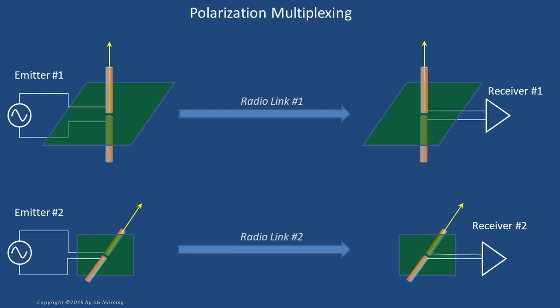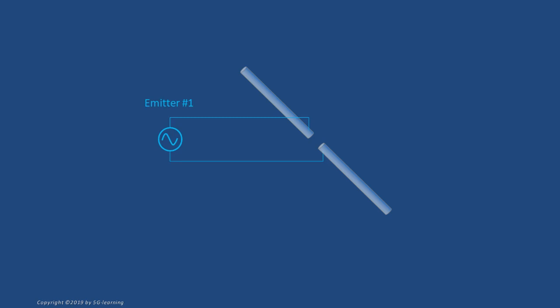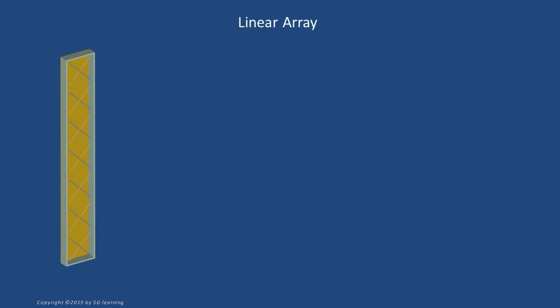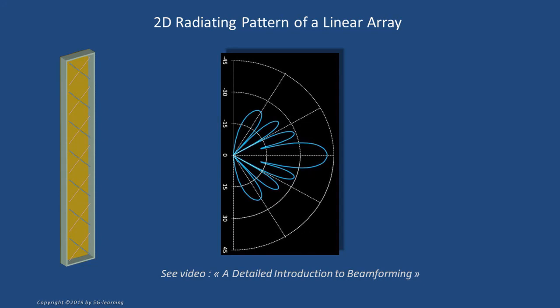Let's have a look at its practical implementation. One of the base station emitters is connected to a pair of cross-polarized dipoles aligned, for example, at minus 45 degrees to the left of the vertical line. The second base station emitter is connected to a couple of dipoles at plus 45 degrees to the right of the vertical line. A similar arrangement may be used at the reception site. We may stack several cross-polarized dipoles on a vertical straight line, the resulting structure being called a linear array. You may recall from a previous video that a linear array concentrates its radiating energy on a given direction — a capability called beamforming.